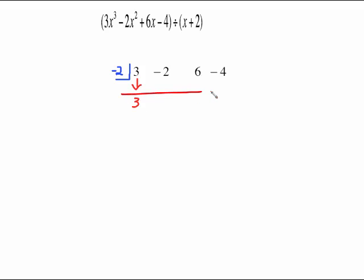Draw your line and multiply. Negative 2 times 3 is negative 6. Add. Negative 2 times negative 8 is 16. Add. Negative 2 times 22 is negative 44. Add. We didn't get 0 here. This is our remainder.